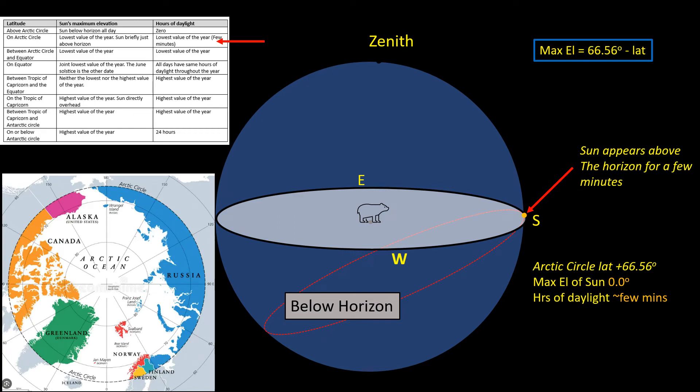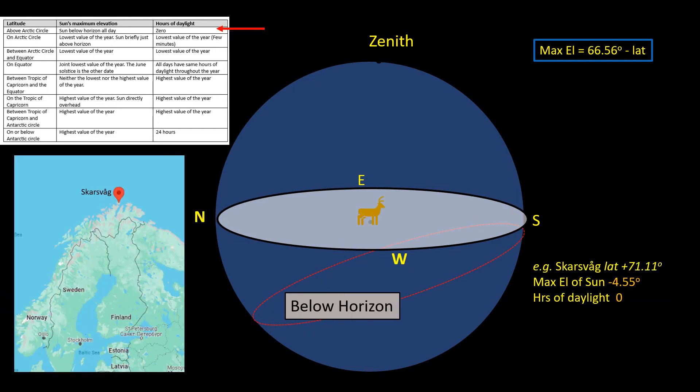If we put these numbers in now for the Arctic Circle, it gives us a maximum elevation of zero. What this means is the sun just briefly touches above the horizon for a few minutes. If we go even further north of the Arctic Circle, then the formula gives us a negative maximum elevation of the sun. What this means is the sun doesn't rise above the horizon, so the hours of daylight are zero.